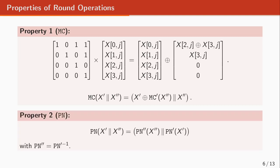The second property is about the PermuteNibbles operation. As previously shown, in this operation the upper half of the state in the input goes to the bottom half in the output, and the bottom half in the input goes to the upper half in the output. We separate this operation into PN' and PN''. Since PN itself is an involutive operation, PN'' is the inverse of PN'.